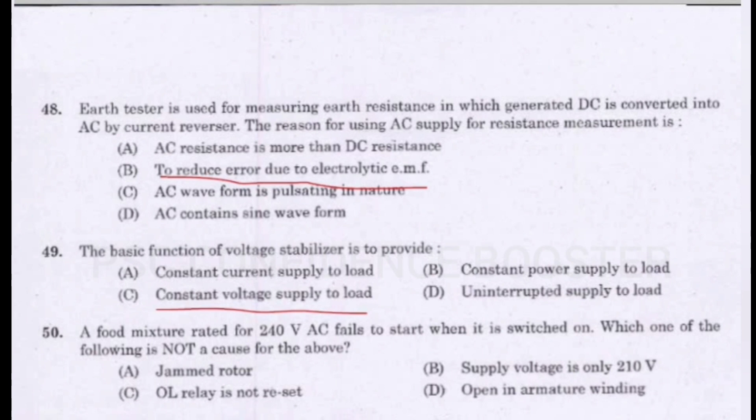Question 50. A food mixer rated for 240 volt AC fails to start when it is switched on. Which one of the following is not a cause for the above? Option A - Jammed rotor. Option B - Supply voltage is only 210 volt. Option C - If the overload relay is not reset. Option D - Open in armature winding. Answer is Option B: Supply voltage is only 210 volt.